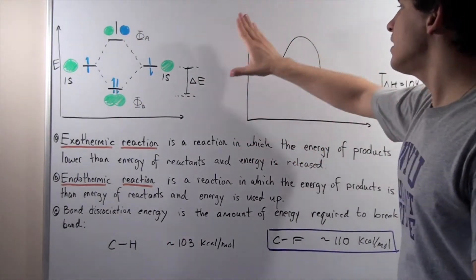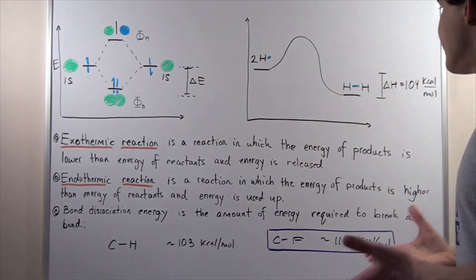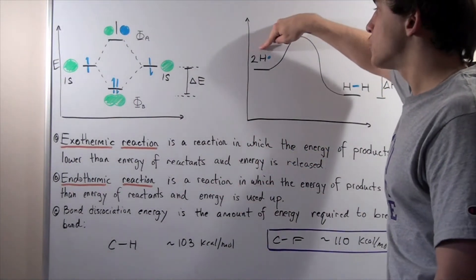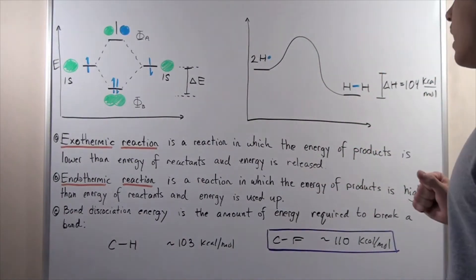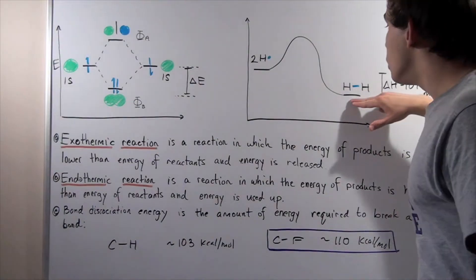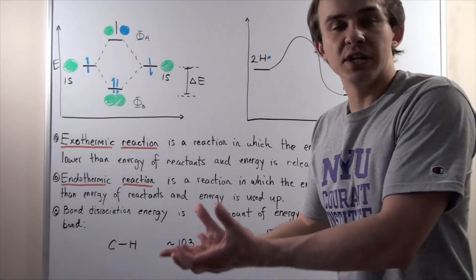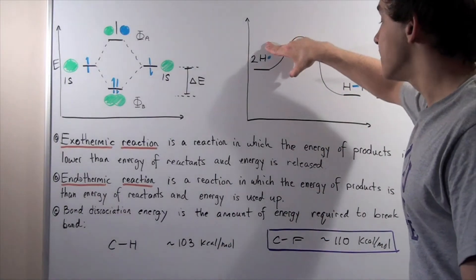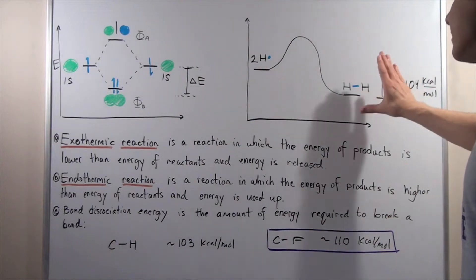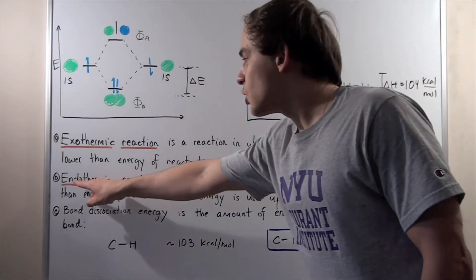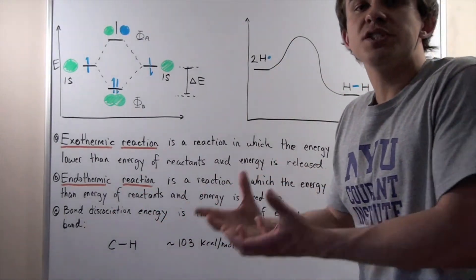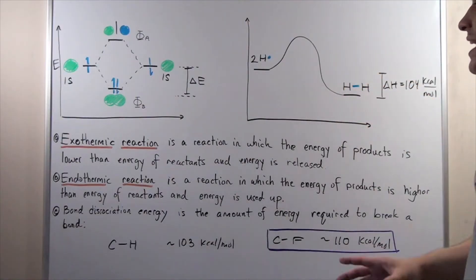Now let's look at the same diagram but work backwards. We begin with a diatomic H₂ molecule and want to break the covalent bond to form two separate H atoms. Since we go from a lower energy to a higher energy, we have to input energy. We input energy to break the bond and form two individual H atoms. This is known as an endothermic reaction — a reaction in which the energy of products is higher than the energy of reactants and energy is used up or inputted into the system for the reaction to take place.